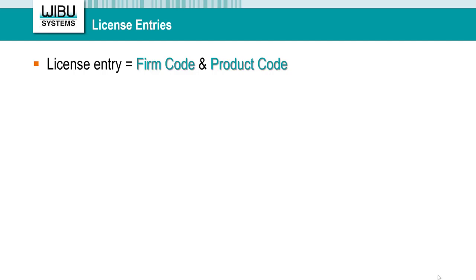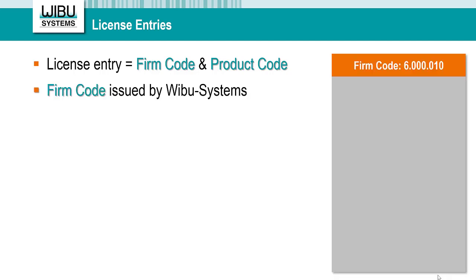The Firm Code is issued by Wibu Systems. It's a top priority for our team to make sure that each Firm Code is unique. This is the fundamental prerequisite for you to be the one and only vendor who can create, modify, and delete licenses with your unique Firm Code. When placing your first order for CodeMeter technology, you receive the Firm Code already set in a master dongle known as the Firm Security Box, or FSB. The FSB should be plugged into your computer during the protection and the creation processes of your licenses.